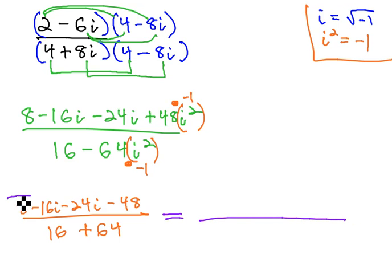Combining like terms, 8 minus 48 is negative 40. Negative 16 and negative 24 is negative 40i, and in the denominator, 16 plus 64 is 80.